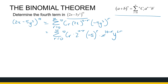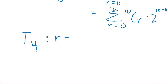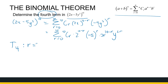So when it's in this format, it's looking a little bit tidier. Now let's see what we're asking for — we're asking for the fourth term. What is the value of r going to be? Because this expansion gives me all 11 terms, where the first term has r = 0, the second term r = 1, the third term r = 2, the fourth term r is going to be equal to 3.